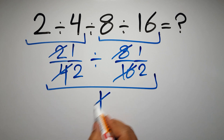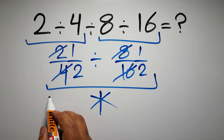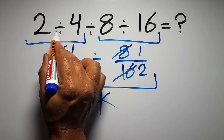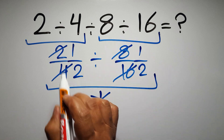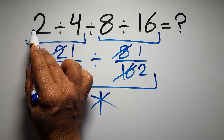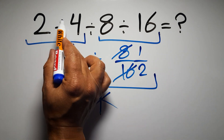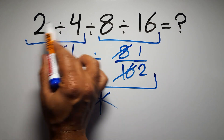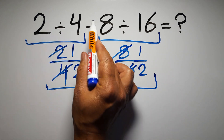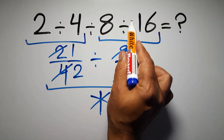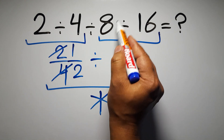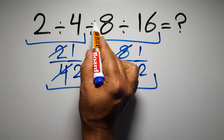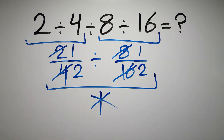But this answer is not correct, because according to the order of operations, when we have more than one division in an expression, we have to work from left to right. So here, first we have to do this division, then this division, and finally this division. If we do this division before this division, it is wrong.